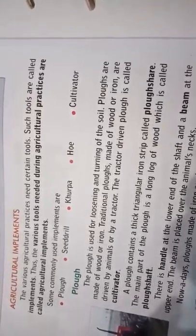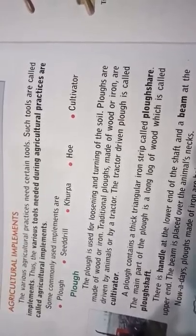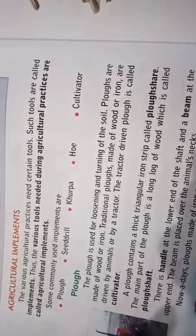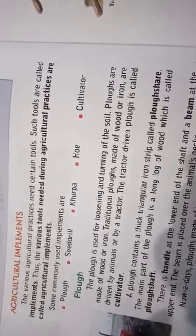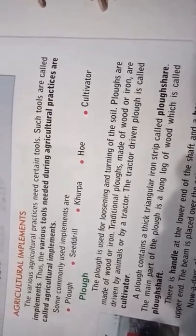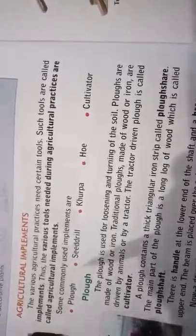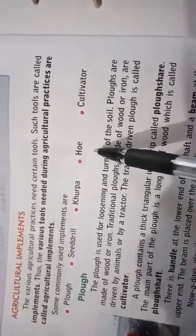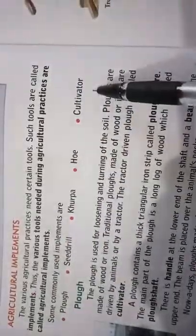Let's talk about agricultural implements — the tools which are used in crop production. Agricultural implements are the tools used in agricultural practices. There are various types, for example: plough, seed drill, khurpa, hoe, and cultivator. These are the names of a few agricultural tools used in crop production.